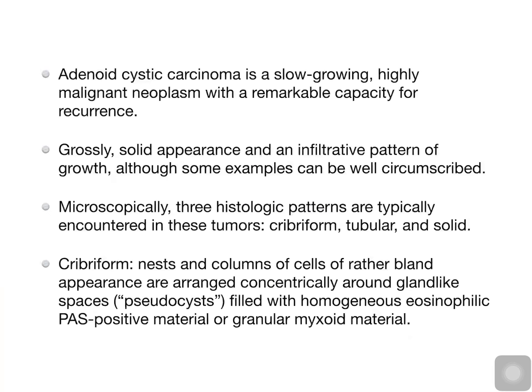Adenoid cystic carcinoma is a slow-growing, highly malignant neoplasm with a remarkable capacity for recurrence. Grossly, it shows a solid appearance and an infiltrative pattern of growth, although some examples can be well circumscribed. Microscopically, three histologic patterns are typically encountered: cribriform, tubular, and solid.